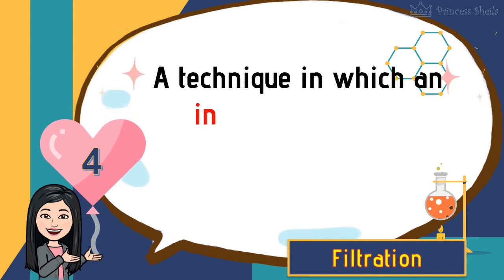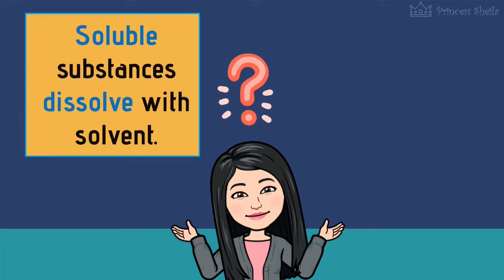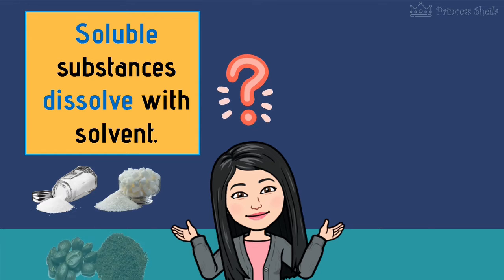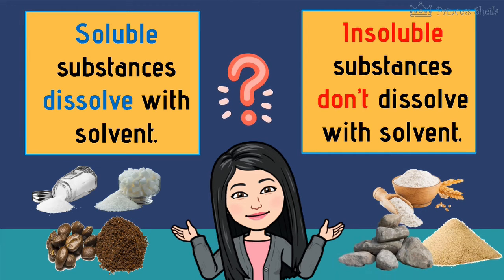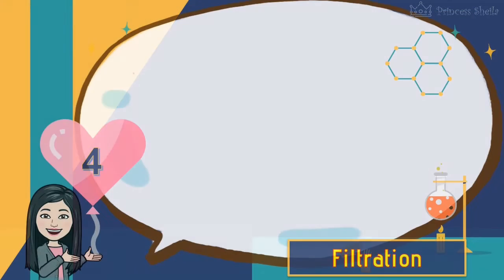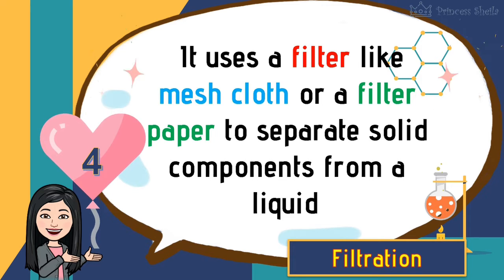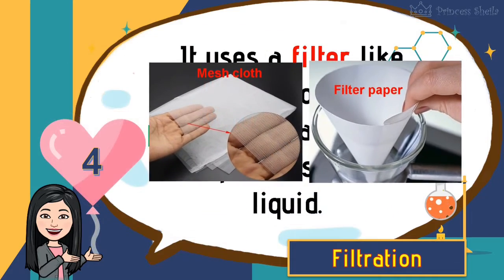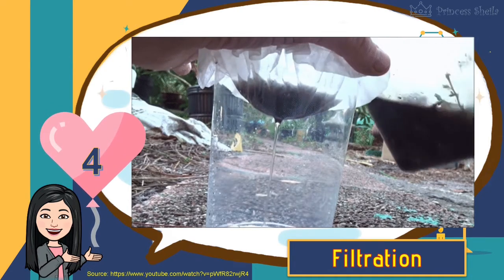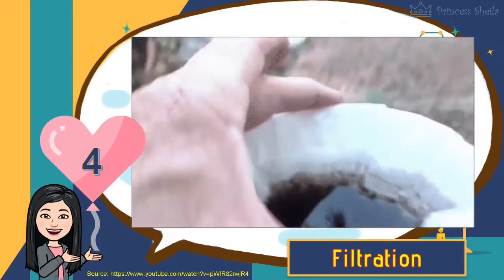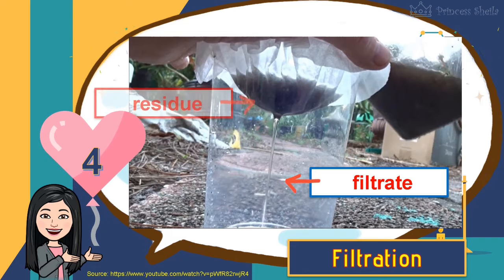Fourth is filtration. It is a technique in which an insoluble solid is separated from a liquid. When we say soluble, it dissolves with solvent — examples are salt, sugar, and coffee powder. Insoluble solids do not dissolve with solvent — examples are flour, sand, and stone. It uses a filter like mesh cloth or filter paper to separate solid components from a liquid. The clean water that passes through the filter paper is called the filtrate, while the solid particles that are left behind are called the residue.